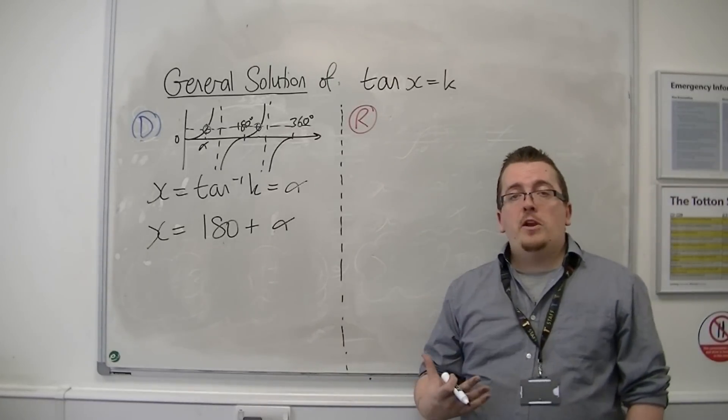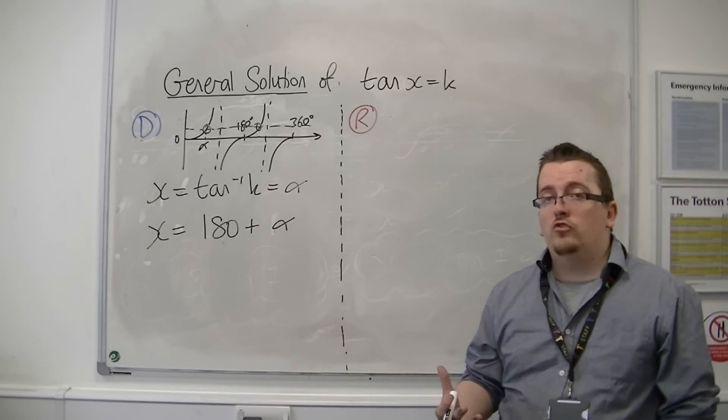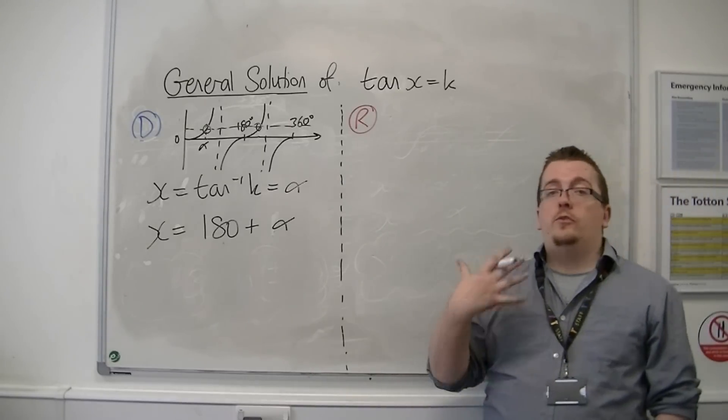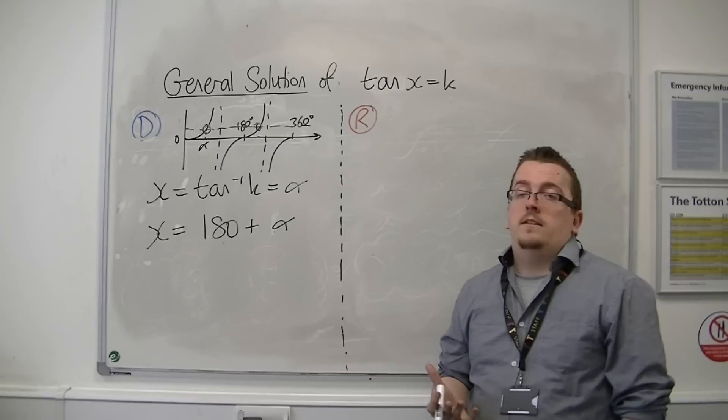Now, what was the period of tan? That was 180 degrees. So remember, for sine and cosine, the period is 360. For tan, it is 180 degrees.